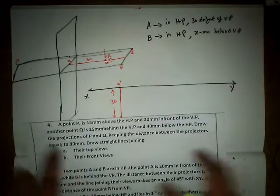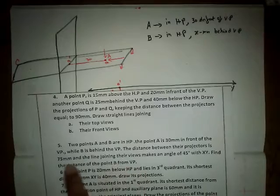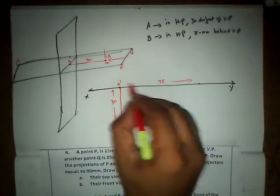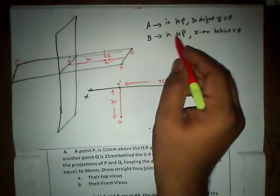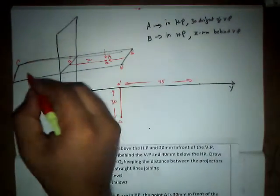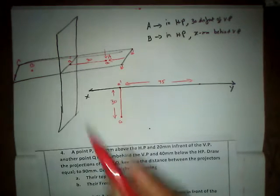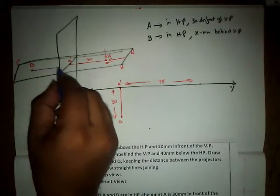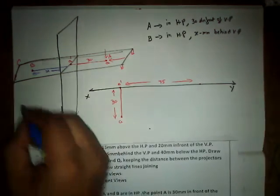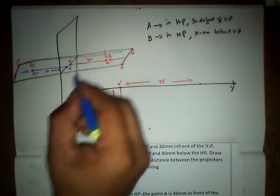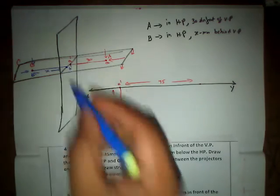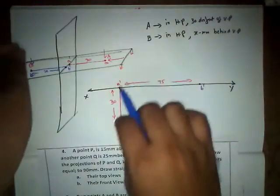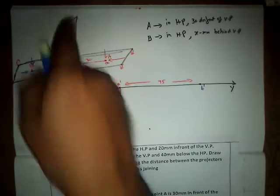The distance between the projectors from A to B is 75mm. Now we need to draw projector B. B is in HP and behind VP, so the point lies behind, in the third quadrant. This is point capital B. Since the distance is not given, let us consider it as X mm. The front view projects as B', and on rotating the plane, the top view small b moves upward, above the XY reference line.